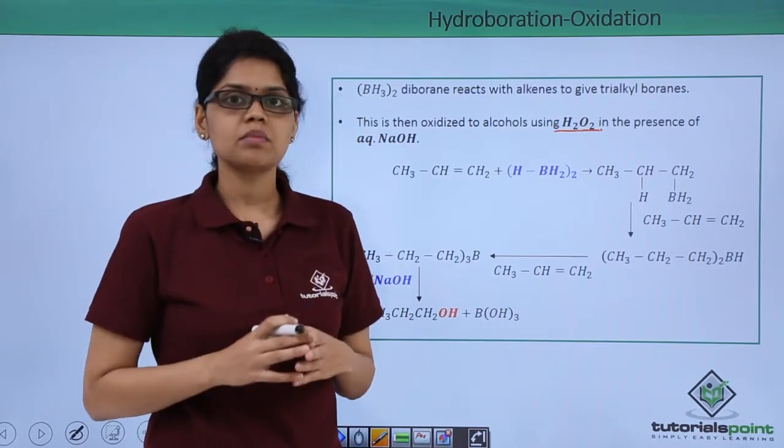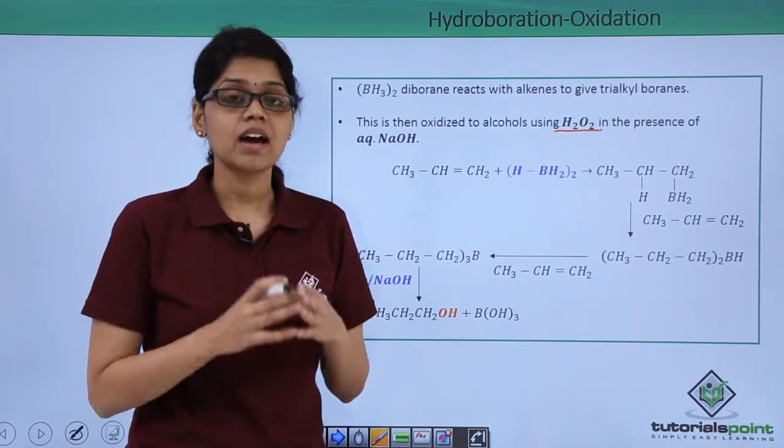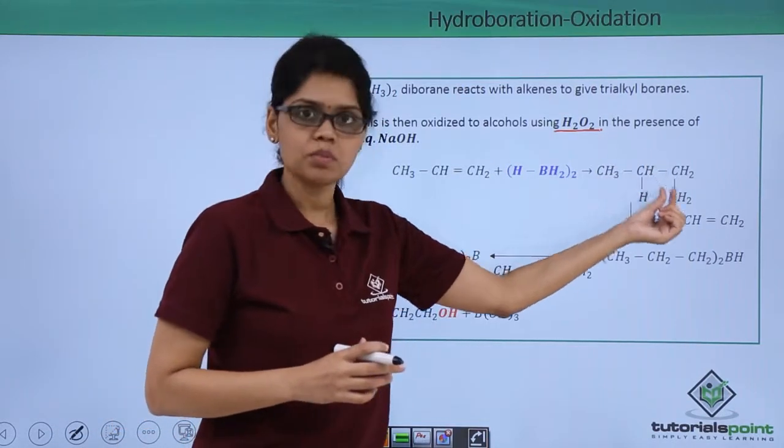Let's try to understand the mechanism by taking an example. Here we have taken propene as a starting alkene and when propene reacts with B2H6, it gives CH3CH2CH2BH2.